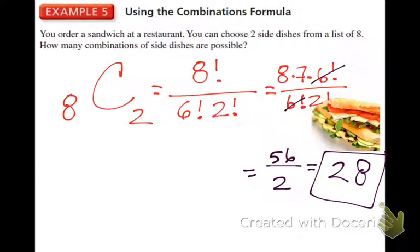So there are 28 different ways you can order two sides from this restaurant. Why did we stop at 6 factorial on top? Because 8 factorial is 8 times 7 times 6 times 5 times 4 times 3 times 2 times 1, and 6 factorial represents 6, 5, 4, 3, 2, 1. Since there's already a 6 factorial on the bottom, they cancel out. Because they're being multiplied, you can cancel them.